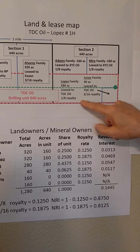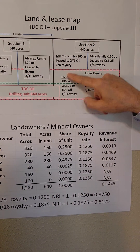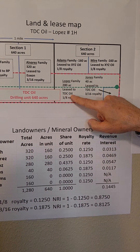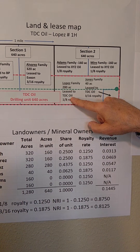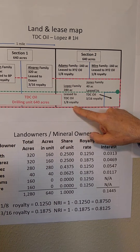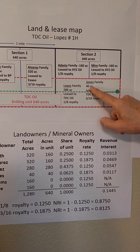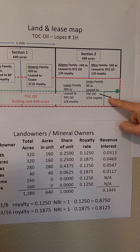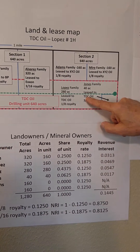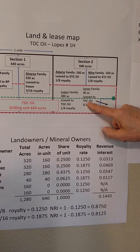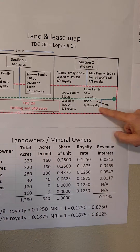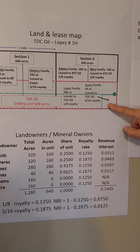The Lopez family owns 380 acres and they've leased to the operator TDC Oil for a 1/8th royalty. But the Jones family owns this 40 acres and they leased it to TDC Oil as well, but they got a little higher royalty — they negotiated a better deal.